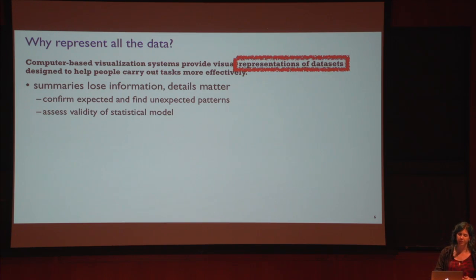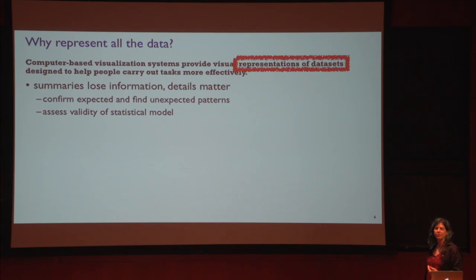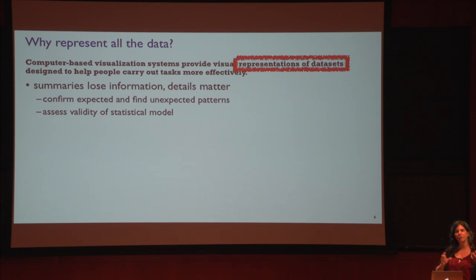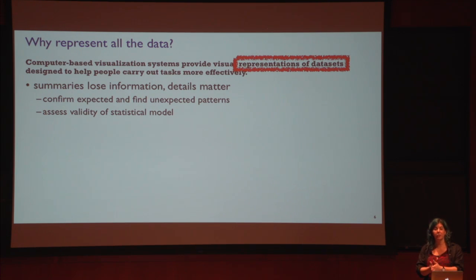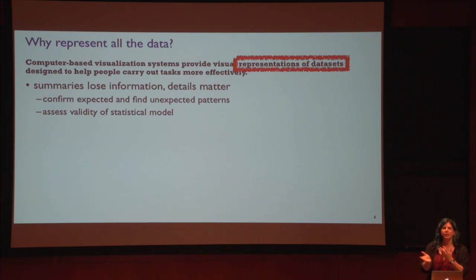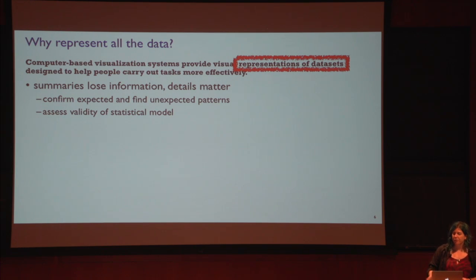How can viz help humans do things faster? And why is it critical to show people representations of entire data sets? Isn't the whole point of statistical methods to summarize the data usefully? The answer is you absolutely do want to use stats — viz goes hand in hand with stats. But any kind of a summary, by definition, is going to lose information, and there are situations where the details matter. Sometimes you want to check whether what you expect is what's there. Sometimes you don't know what's there and you want to find the unexpected thing. And with statistical models, you want to assess whether they are valid.